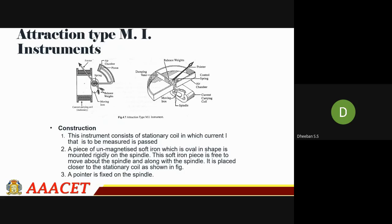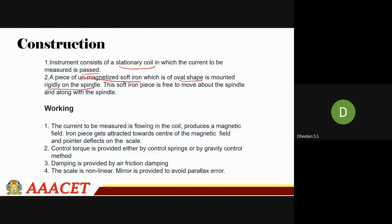This soft iron core is free to move about the spindle. The current to be measured flows in the coil, which is responsible for the production of the magnetic field. The soft iron piece gets attracted towards the magnetic field and the pointer deflection starts on the scale.